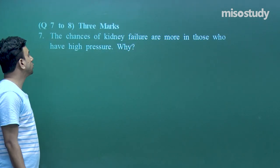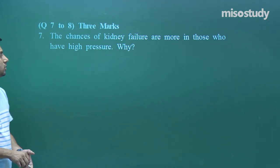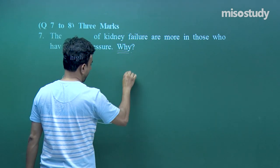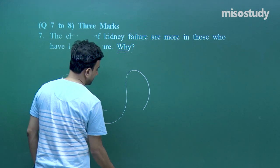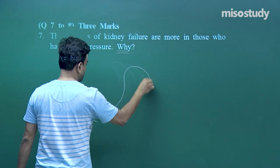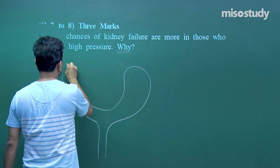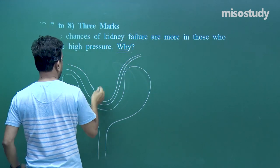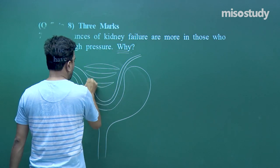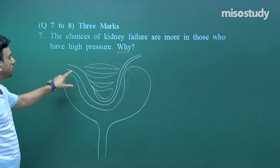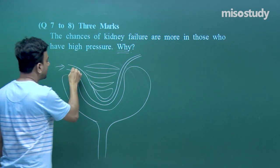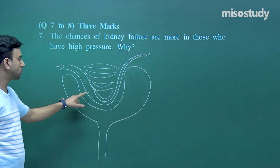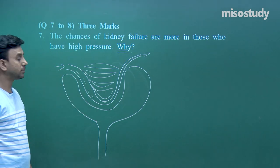The chances of kidney failure are more in those who have high blood pressure. The afferent arteriole brings blood in and the efferent arteriole is the exit arteriole. The Bowman's capsule and glomerular capillaries together form the Malpighian corpuscle.